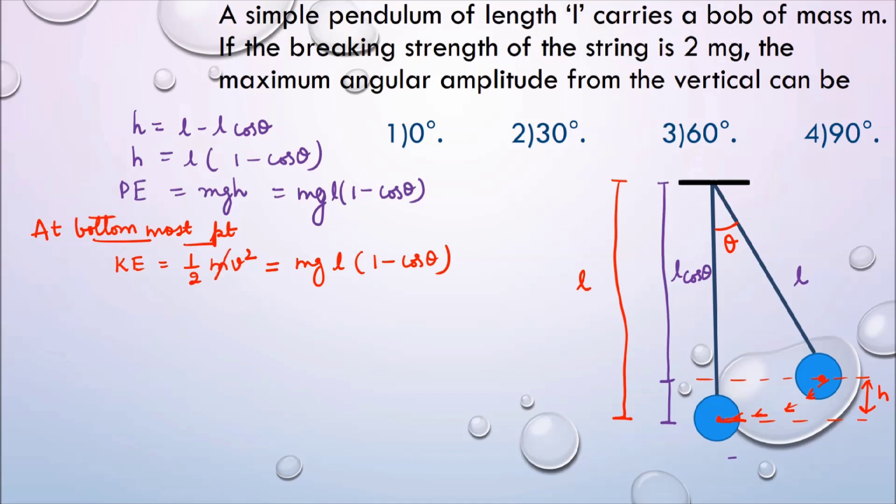So looking at the expression, we can cancel m. Hence we got v² is equal to 2gL(1 minus cos θ). So I am going to keep it in a box so that this result can be used later.